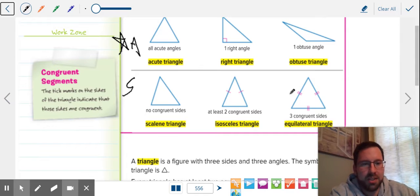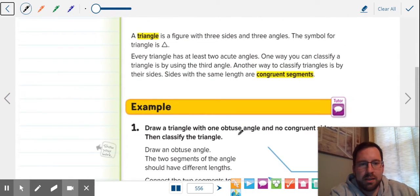So you could have an acute equilateral, you can have an acute isosceles, an acute scalene, you could have an obtuse scalene, obtuse isosceles. The only kind of equilateral triangle has to be acute. You can't have these other two equilaterals. But these two can be right, they can be obtuse.